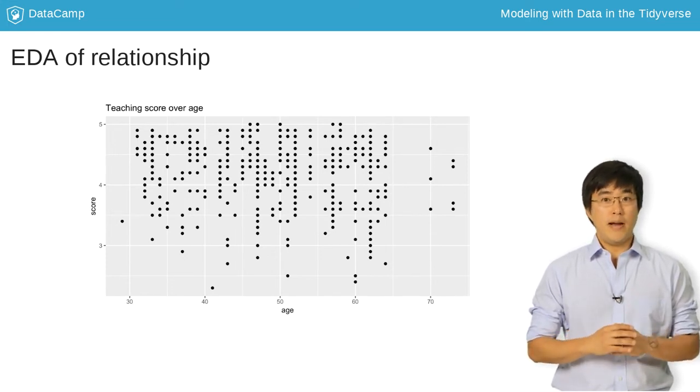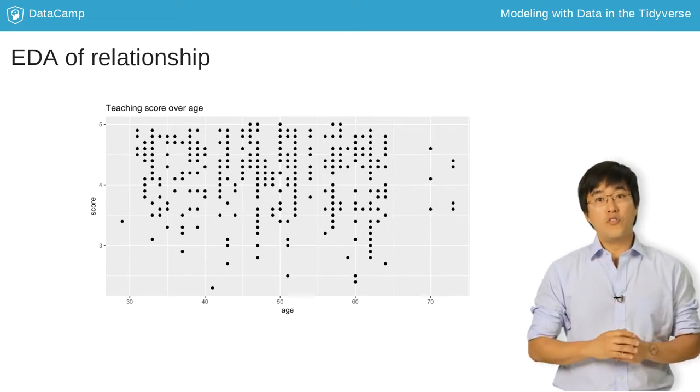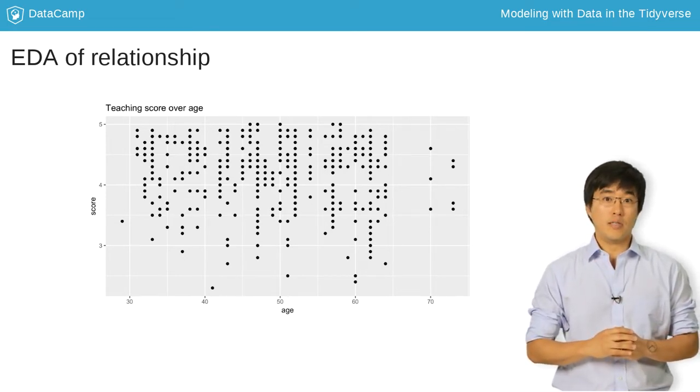Although not immediately apparent, there are actually not one but two perfectly superimposed points. How can you visually bring this fact to light?